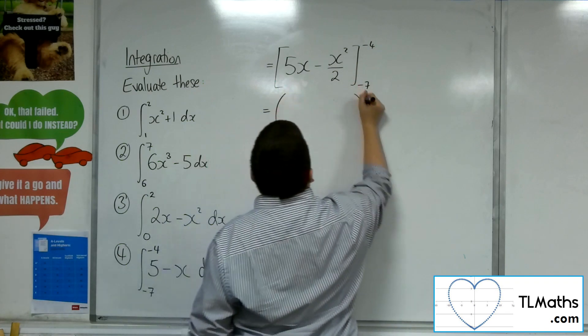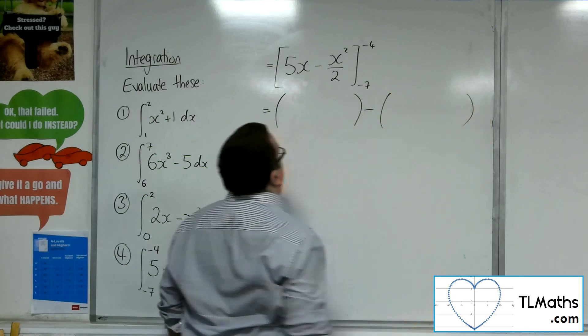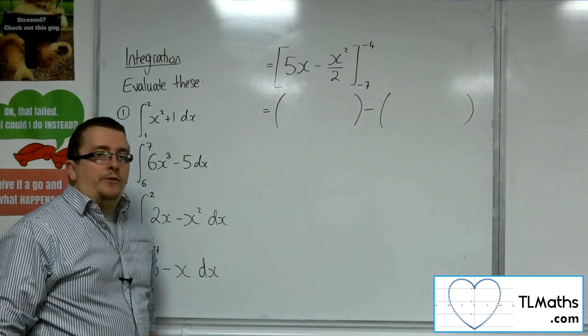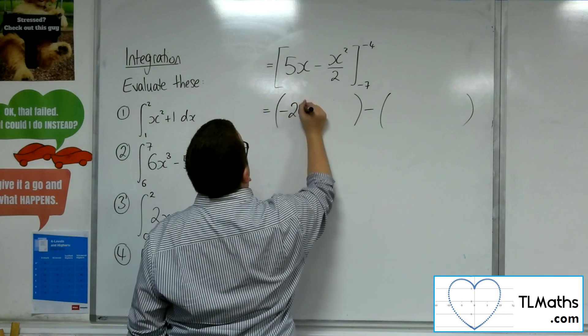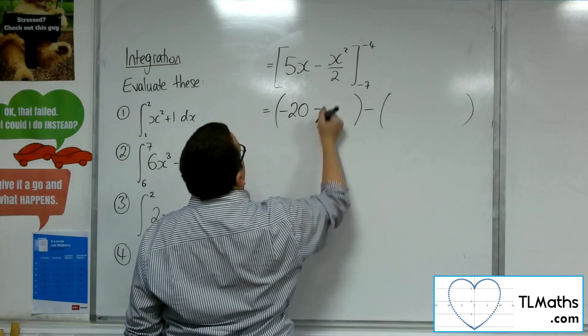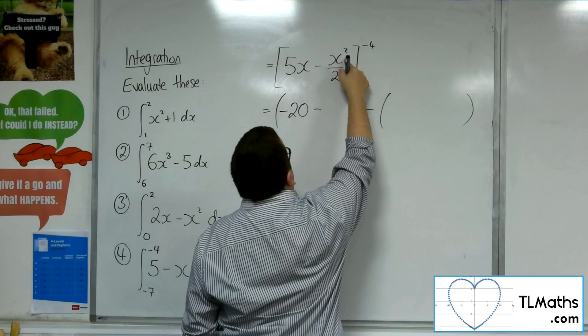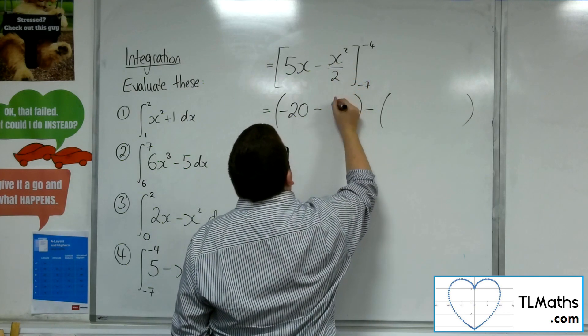So open up two brackets. Now substituting in minus 4 first. 5 lots of minus 4 is minus 20. Then we're going to be taking away minus 4 squared, which is 16 divided by 2, which is 8.